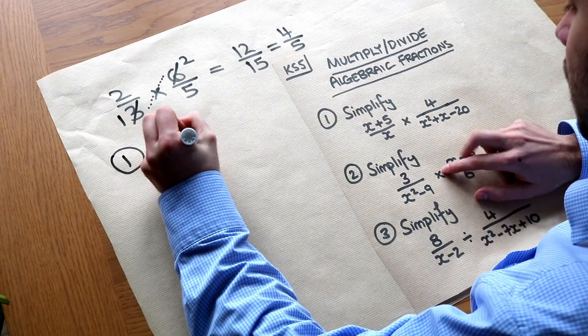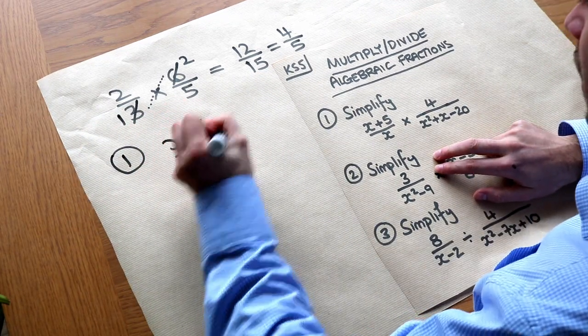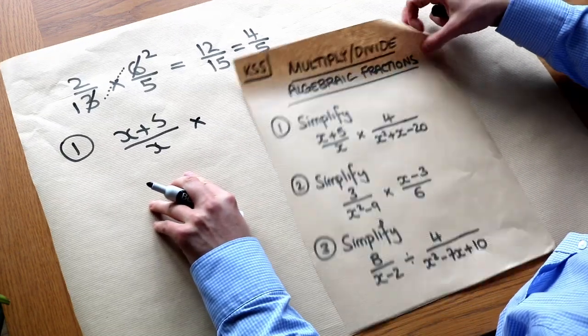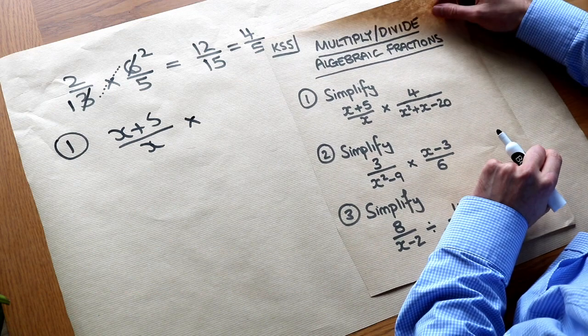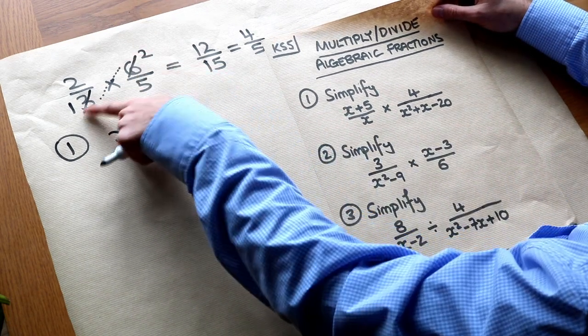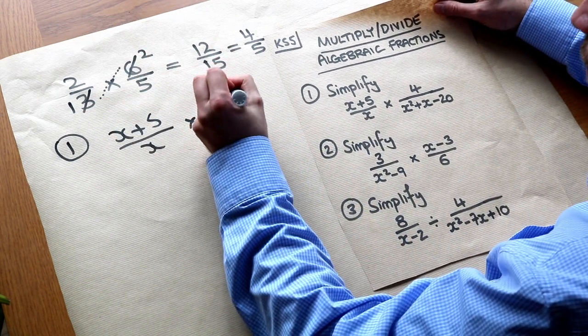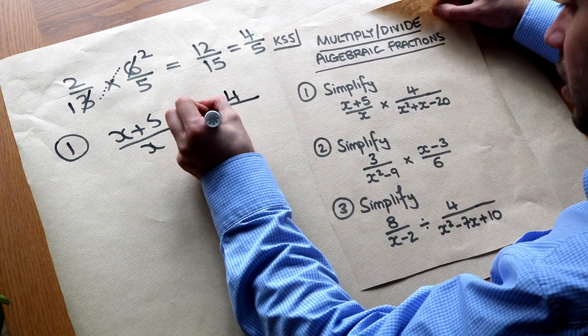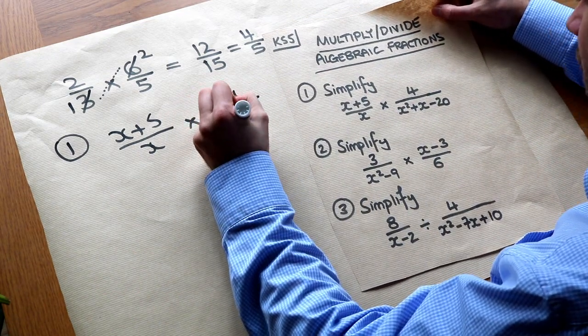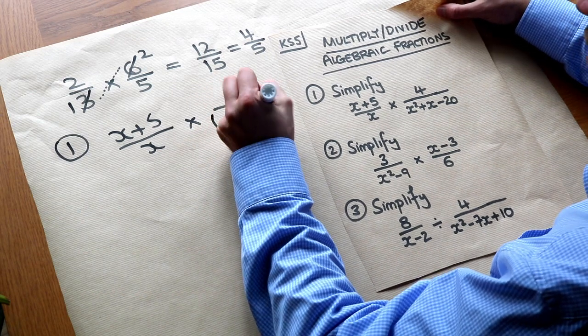So let's do that here. So we've got x plus 5 over x and we're timesing by, and the strategy here is to factorize everything you can first to identify all the factors just like we can identify common factors here. So we've got 4 over, now if we factorize x squared plus x minus 20 you should know how to do that. You get x plus 5 times x minus 4.